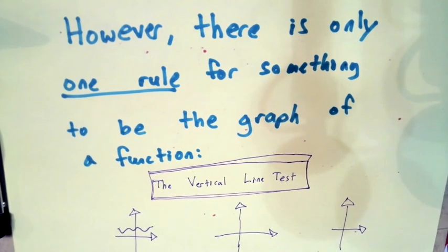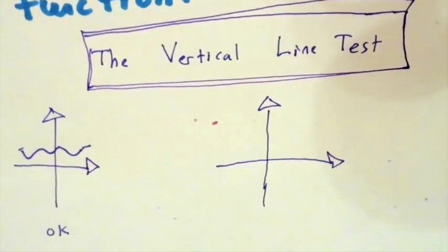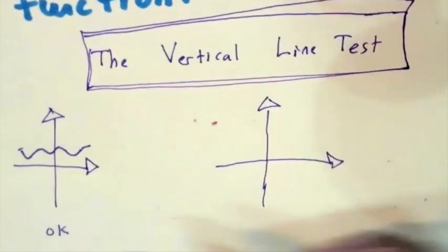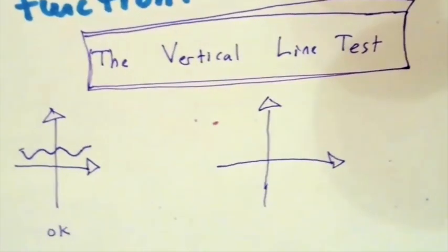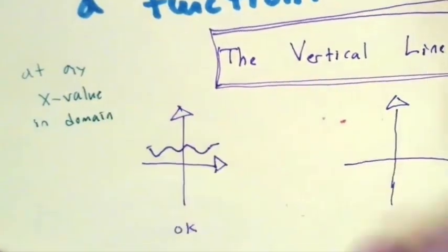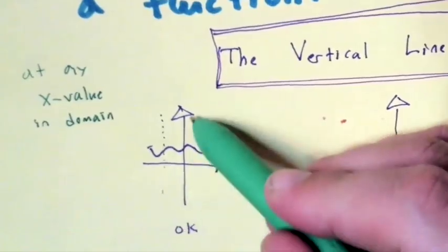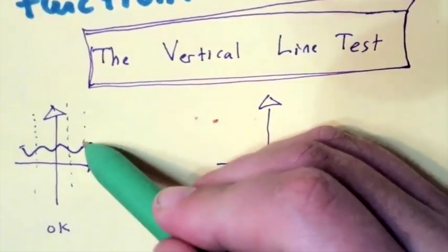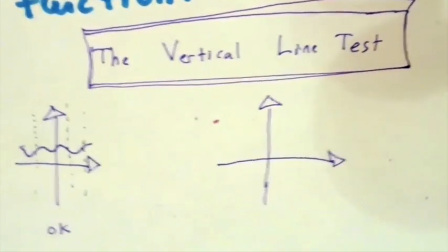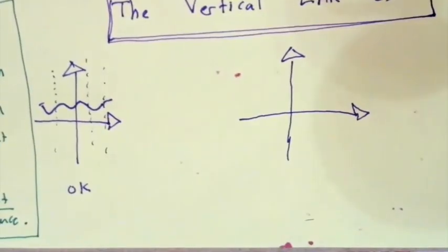However, there's only one rule for something to be the graph of a function. It's called the vertical line test. The vertical line test says if I pick any x value in the domain and I draw a vertical line at that x value, I can only hit the graph at most once. It's important that I'm saying here at most once.